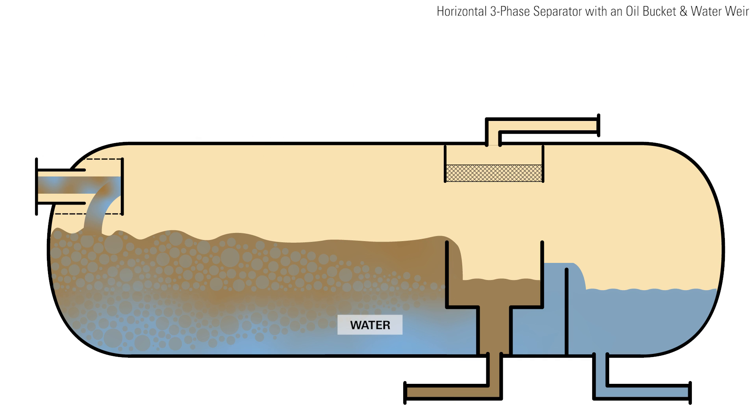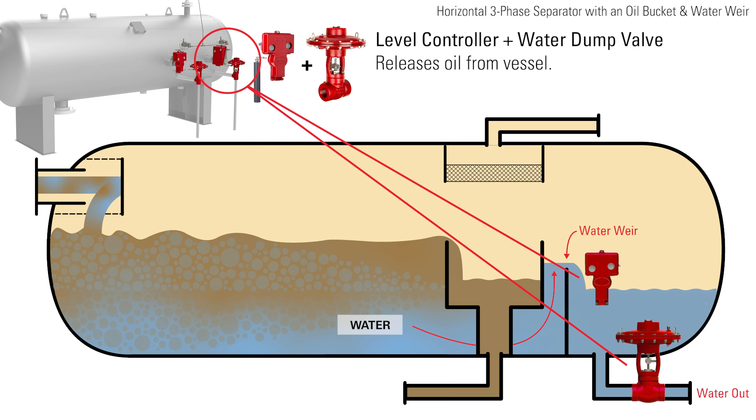The water flows under the oil bucket and over the water weir, where it is controlled by the water level controller and dump valve.